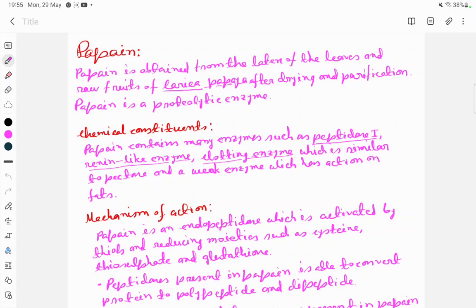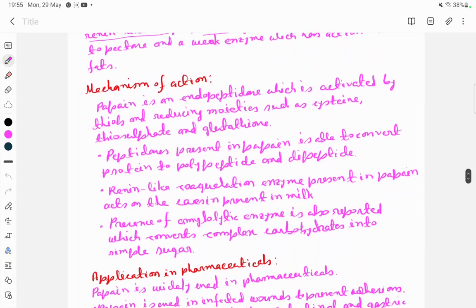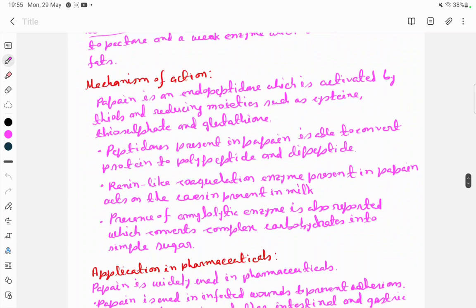It is similar to pectase, and a weak enzyme which acts on fats. The mechanism of action: papain is an endopeptidase which is activated by thiols and reducing moieties such as cysteine, thiosulfate, and glutathione.